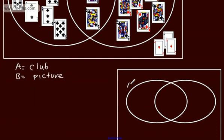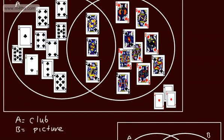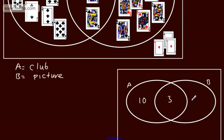If we put this information on the Venn diagram: A and B — in the middle we've got 3. On this side we've got 10, as there are 13 clubs in total. And over this side, we know we've got 12 picture cards, so we've got 9 in total. That leaves 30 on the outside, since there are 52 cards in the pack.